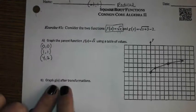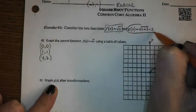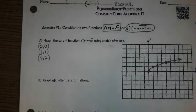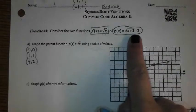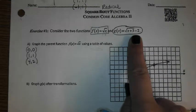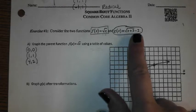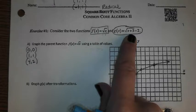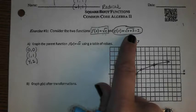Now we're going to graph g of x after the transformations. Here's g of x. Transformations we're going to discuss with every type of function we look at. What transformation occurs first? Here's our parent graph, here's our new graph. What transformation happens first? Shift, stretch, compression, reflection — left, right, up, down. How many?